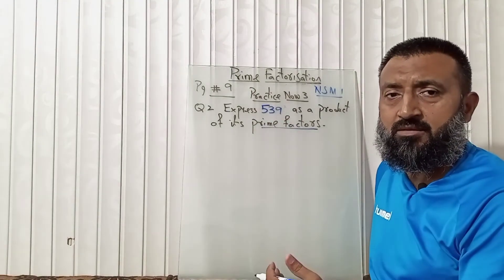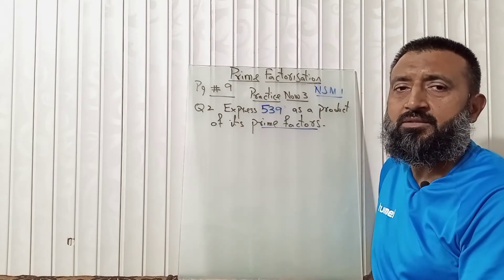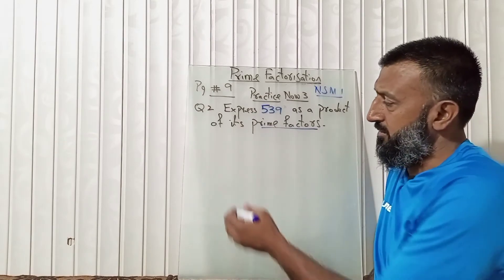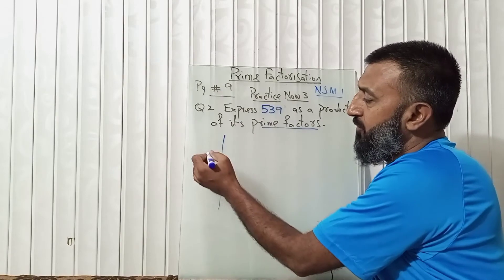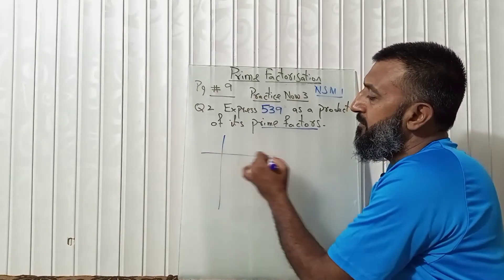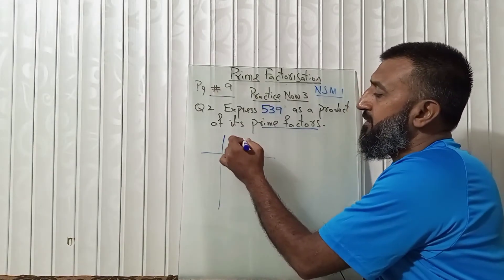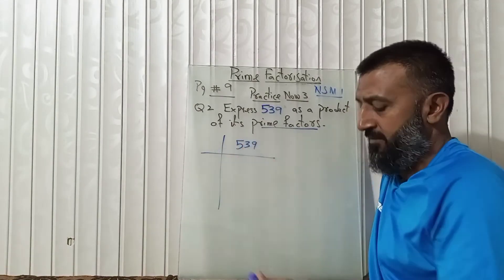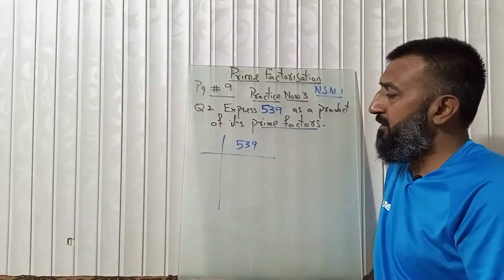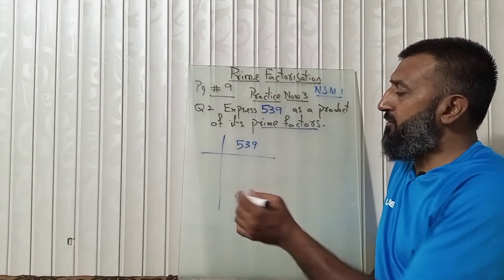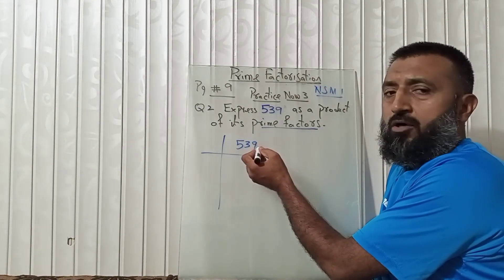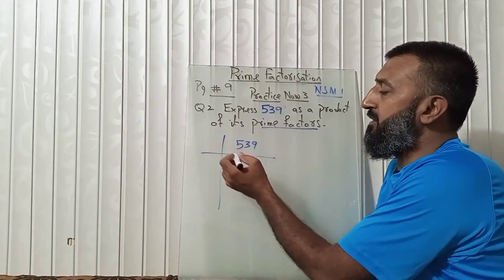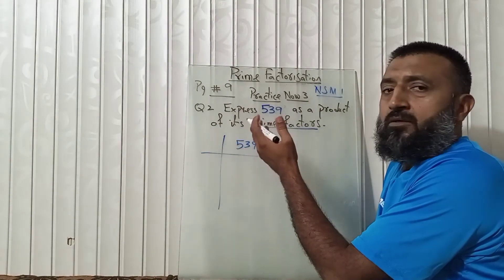The method we are going to use is the repeated division method — that is how we are going to start. We write 539, and due to it being an odd number, we are going to start with an odd number.